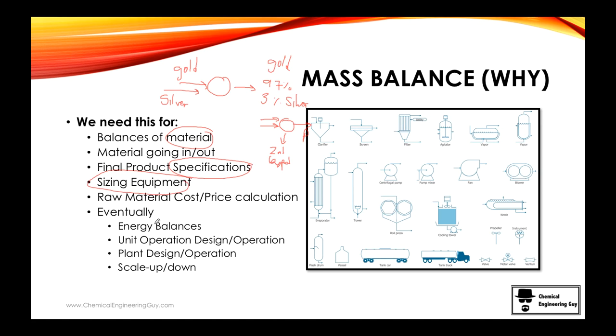It's also important for sizing and equipment. It's not the same working with 10 grams per minute then 10 tons per minute. So of course, 10 grams per minute maybe is a, let's say, a 10 liter tank, I don't know. And this will be a huge distillation column, so different sizes of course.